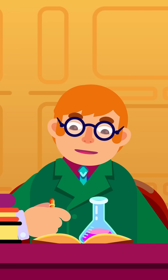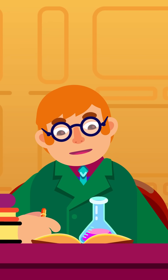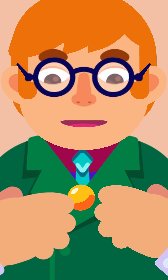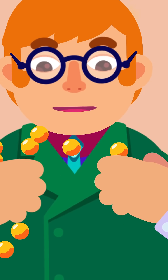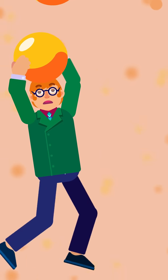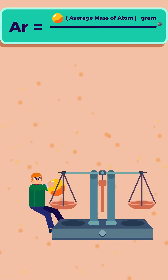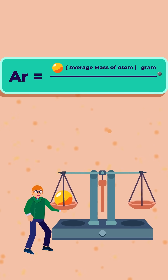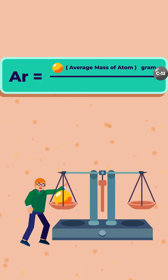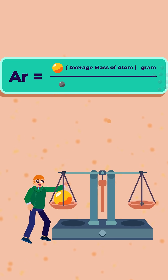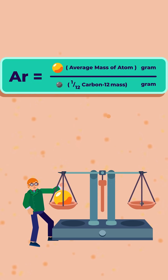What is relative atomic mass? The relative atomic mass, or AR of an atom, is the average mass of one atom of that element compared to one twelfth of the mass of one carbon-12 atom.